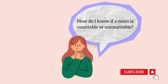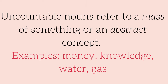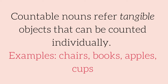But wait — how do I know if a noun is countable or uncountable? Uncountable nouns refer to a mass of something or an abstract concept. For example: money, knowledge, water, and gas. Countable nouns refer to tangible objects that can be counted individually. Tangible means can be touched. For example: chairs, books, apples, and cups.